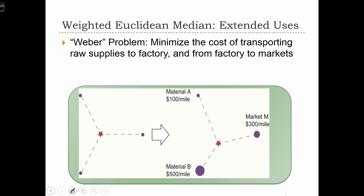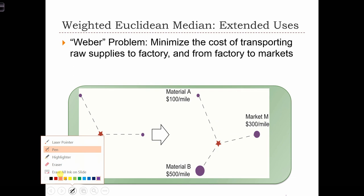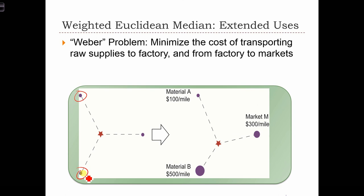The Weber problem is one where we try to minimize the cost of transporting raw supplies to a factory and from a factory to a market. In this case we have two locations of raw supplies — one over here, one over here — and the market to which we want to ship our goods is over here. What we're trying to do is find out where we should put the factory.